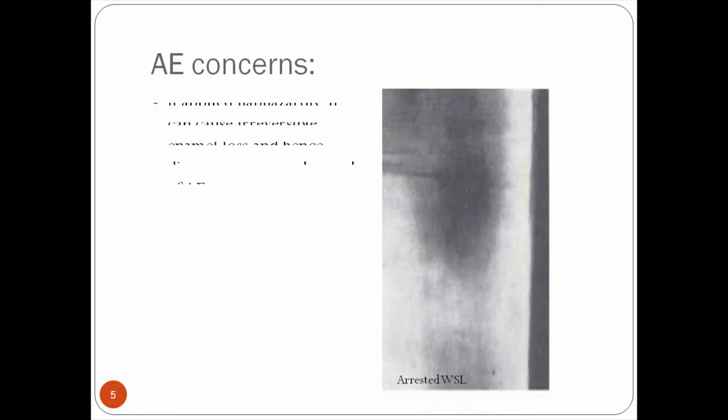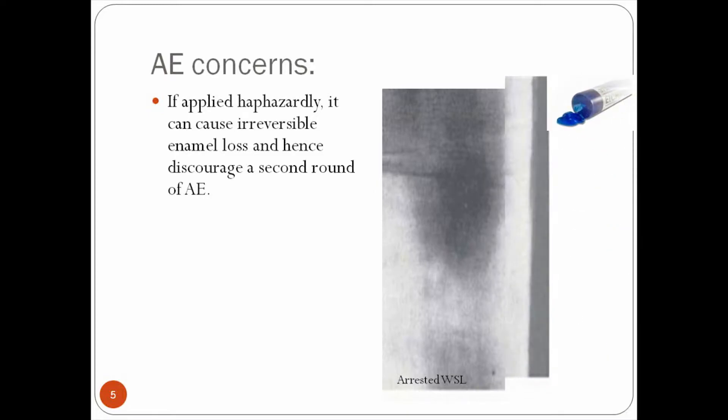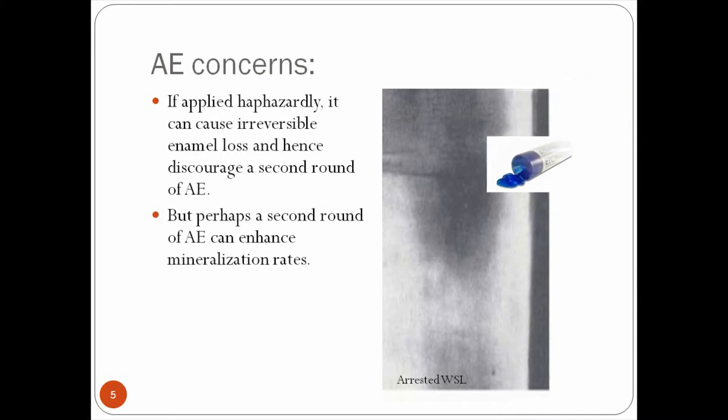Slide 5 is going to talk about the concerns that we have with acid etching. So again, I show you my arrested white spot lesion. And when we have acid etching, if we apply it haphazardly, what can happen is that we can lose an outer portion of the enamel irreversibly. So maybe if we do it cautiously, we can actually end up enhancing the rate of mineralization.